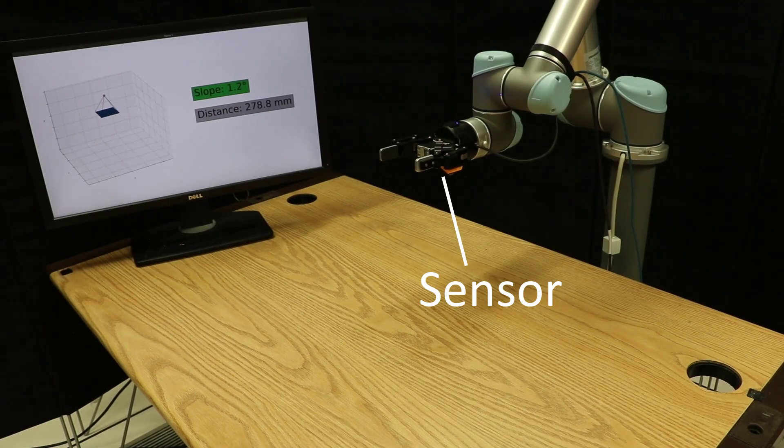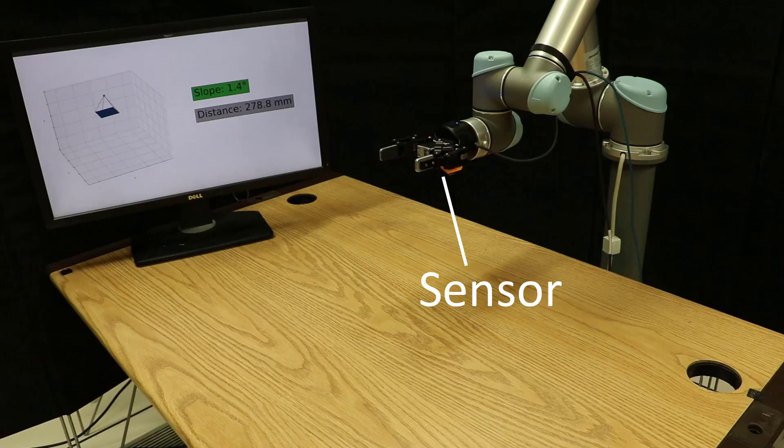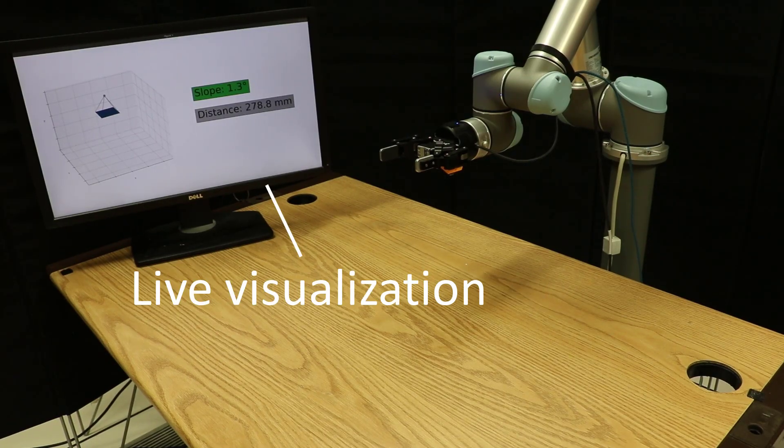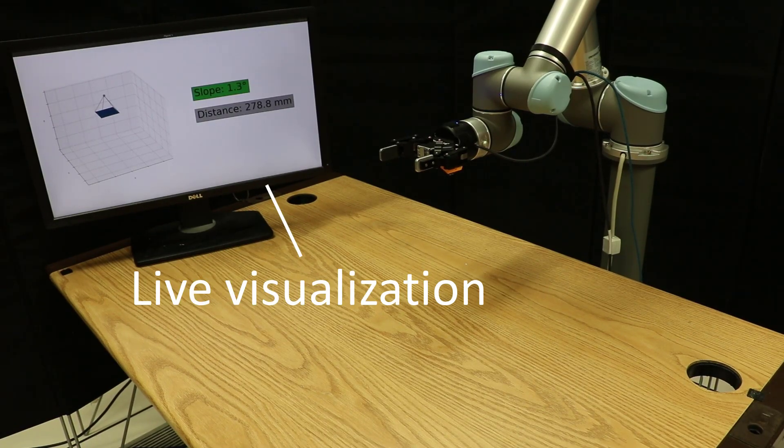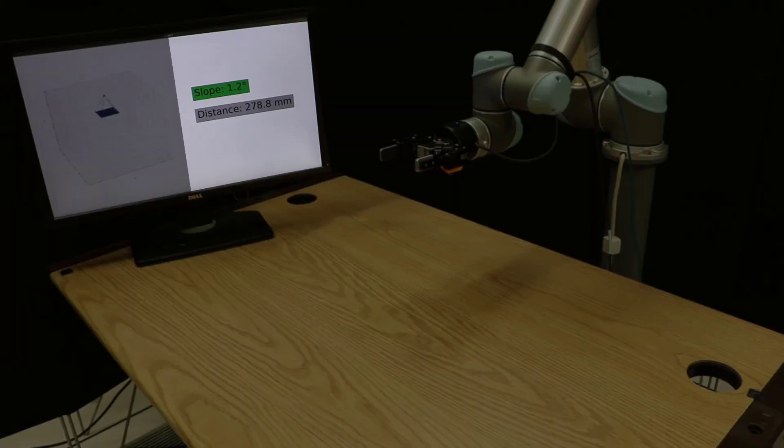Here we show the robot arm positioned over a table with the sensor pointing downwards. On the left is a live visualization of the planar geometry recovered by our method. On the right we see the slope of the plane relative to the sensor and the distance to the plane along the sensor's optical axis.